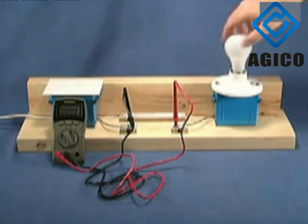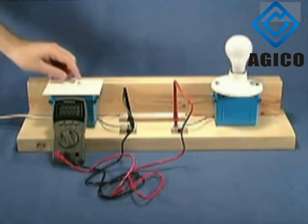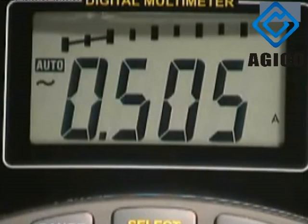We begin by placing a normal 60 watt incandescent bulb in the socket. The measurement from this bulb will give us a comparison point for the other bulbs. After we flip the power switch, we see the multimeter jump to 0.505 amps and hold steady.